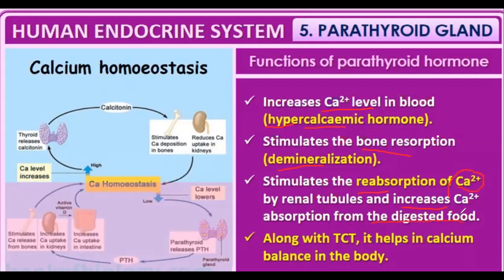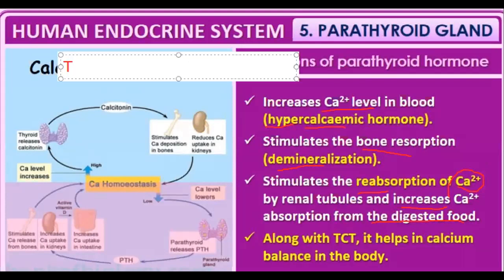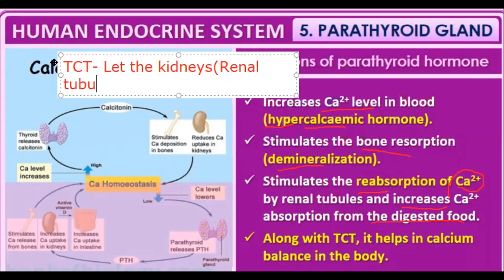If parathyroid hormone increases excessively in the body, our bones will begin to become weak because of dissolution. Resorption means demineralization of bone. The PTH stimulates renal tubules to reabsorb calcium ions back into the blood, whereas thyrocalcitonin allows the kidneys — specifically the renal tubules — to excrete calcium ions.